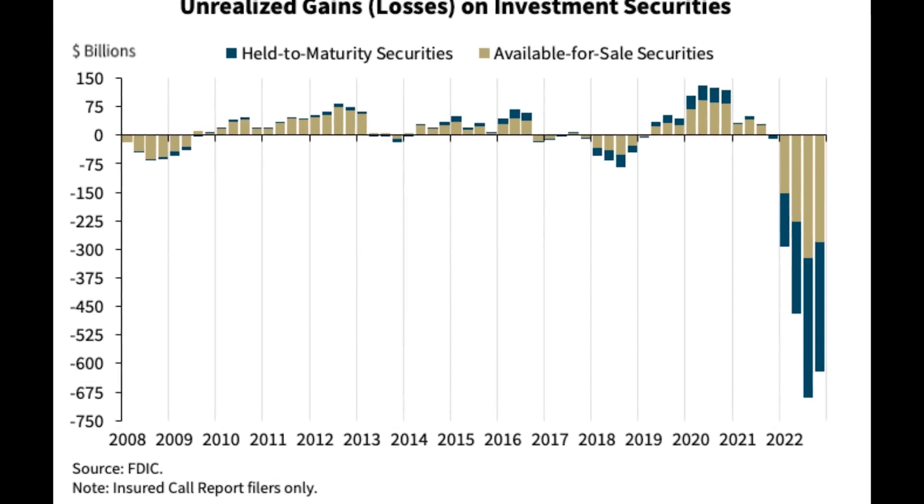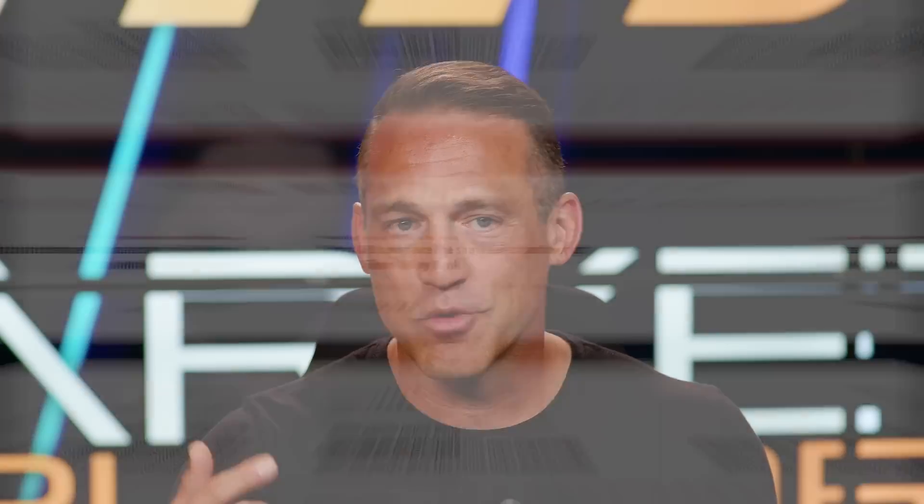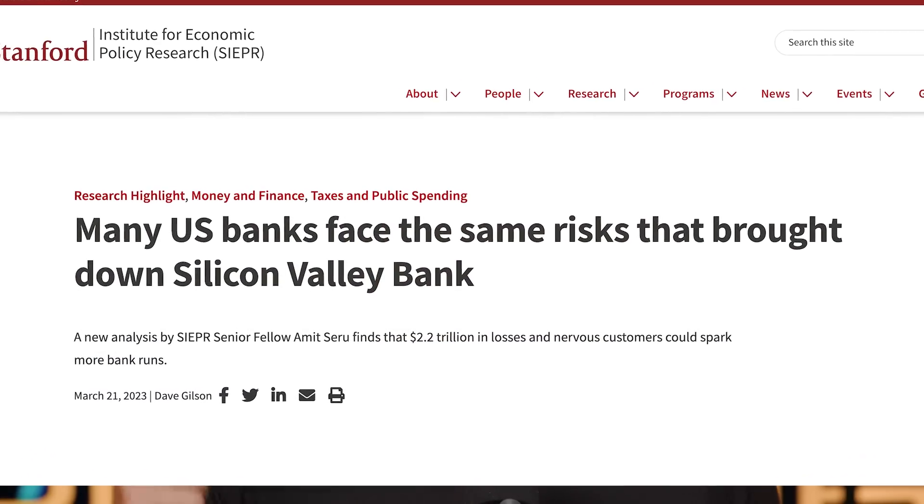On March 6, 2023, FDIC chairman Martin Gruenberg, at the Institute of International Bankers, reported $620 billion in unrealized losses as of December 2022. That's the official estimate — unofficial estimates say there's about $2.2 trillion in losses, such as this report from Stanford stating that many U.S. banks are facing the very same risk that brought down Silicon Valley Bank. Going back to Balaji's point that the Fed caused the problem: it's not like 2008, where banks took on too much risk. In their minds, the banks weren't taking on much risk at all — they were buying bonds, playing it smart. Then the Fed literally pulled the rug right out from under them.